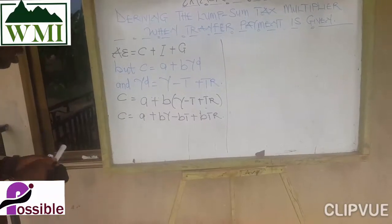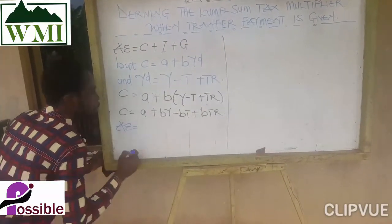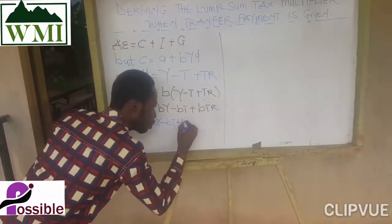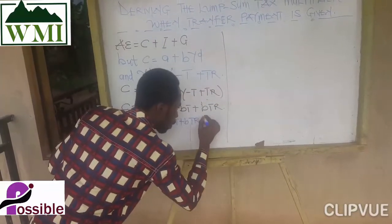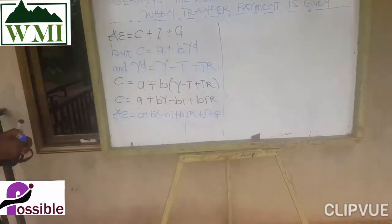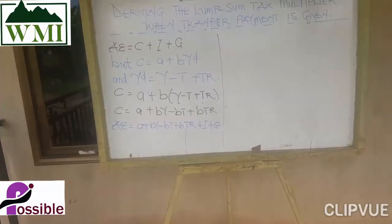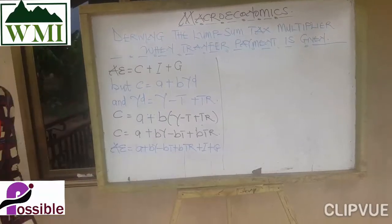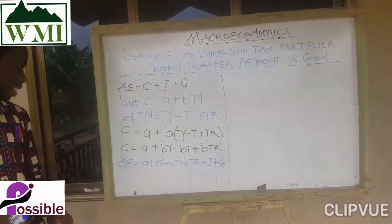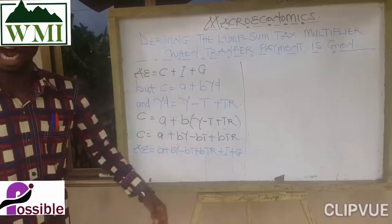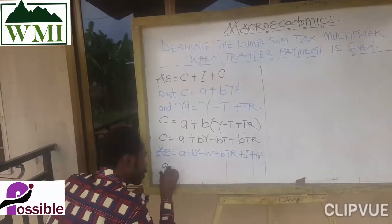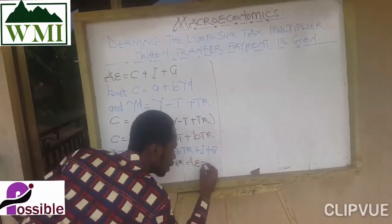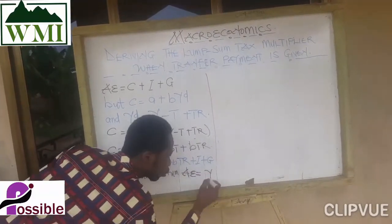Our new aggregate expenditure function is: AE equals A plus BY minus BT plus BTR, plus investment plus government spending. We know that at equilibrium, aggregate expenditure is equal to income or output.